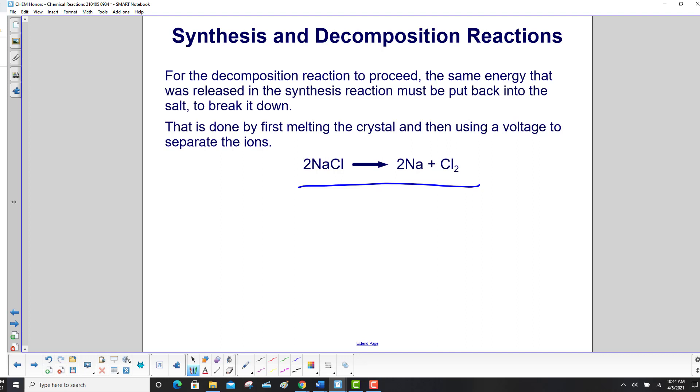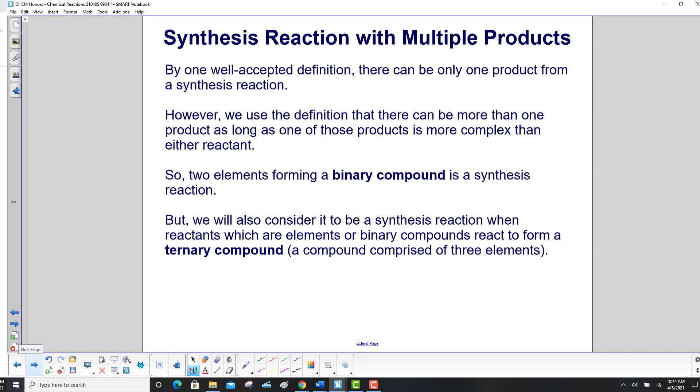This is done by first melting the crystal, the salt crystals, and then using a voltage to separate the ions. By one well-accepted definition, there can only be one product from a synthesis reaction. However, we'll use the definition that there can be more than one product as long as one of those products is more complex than either reactant.